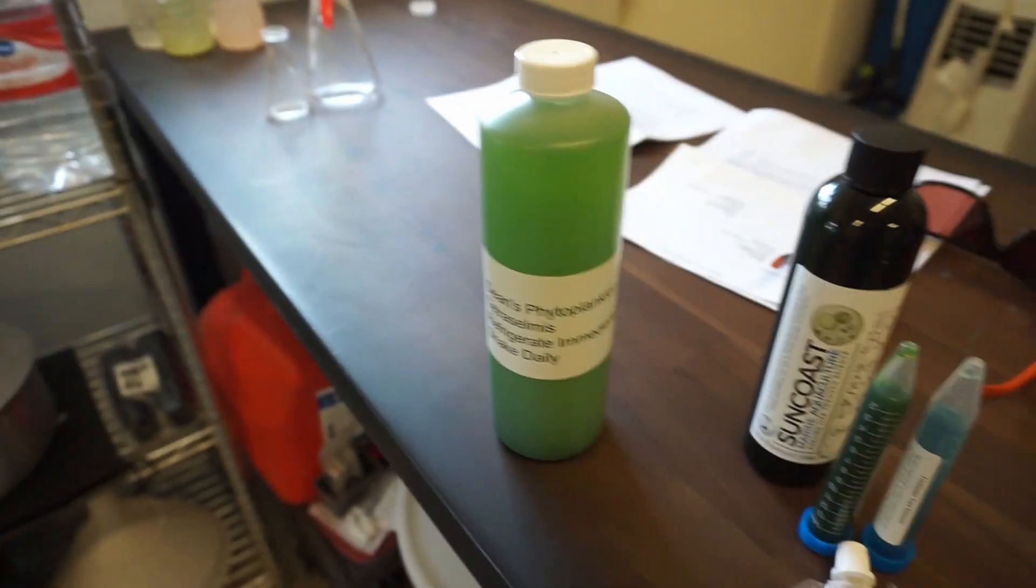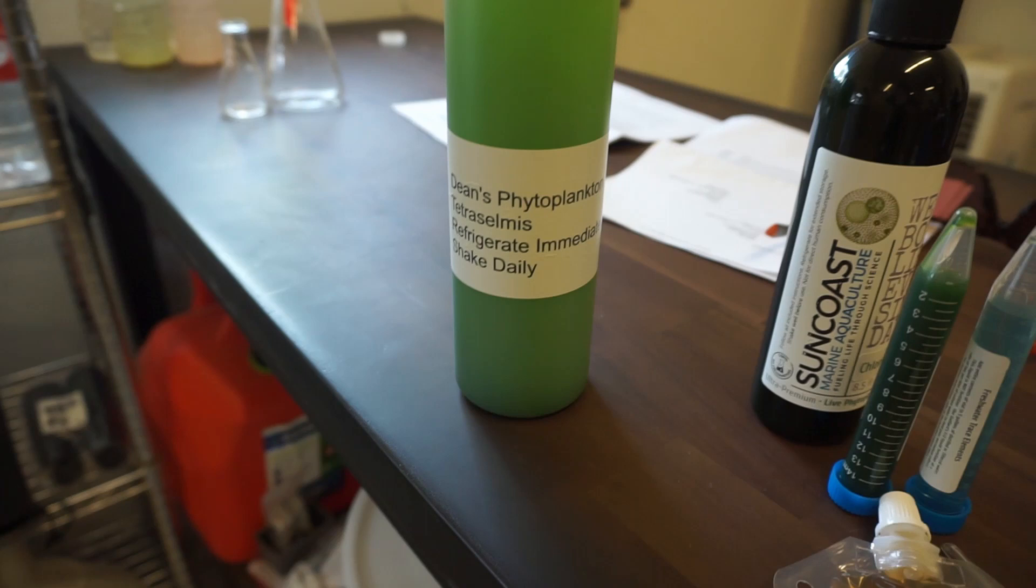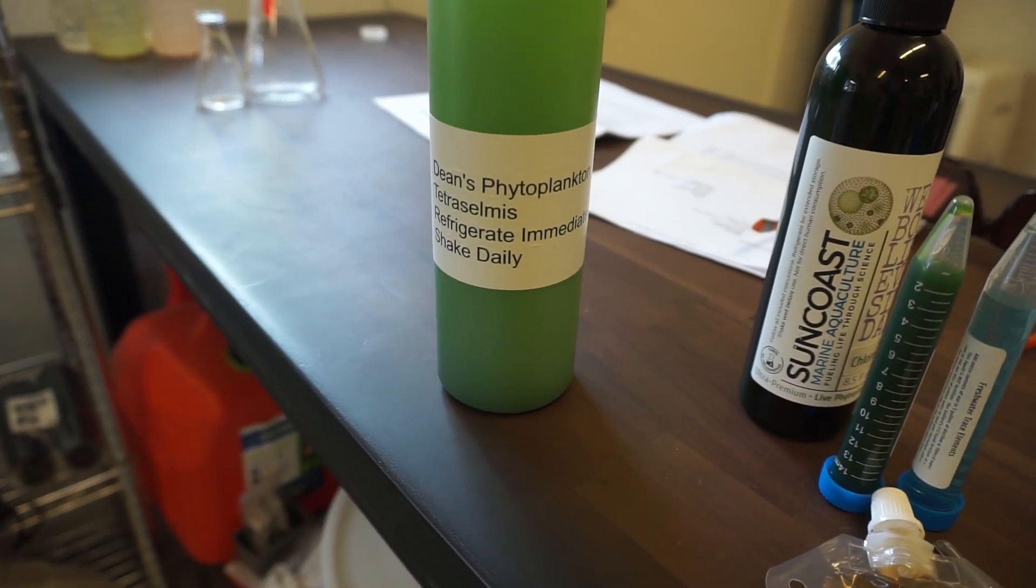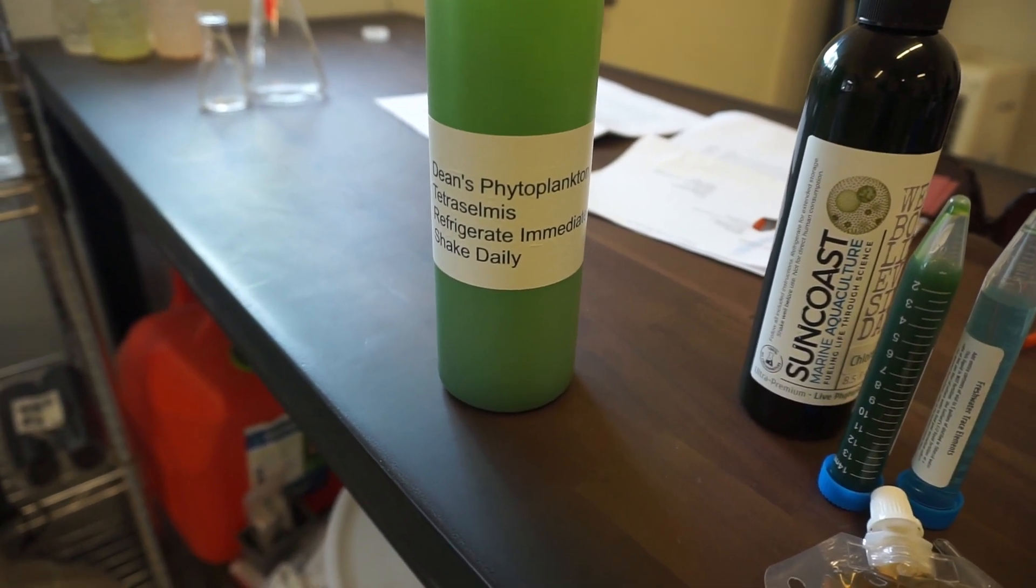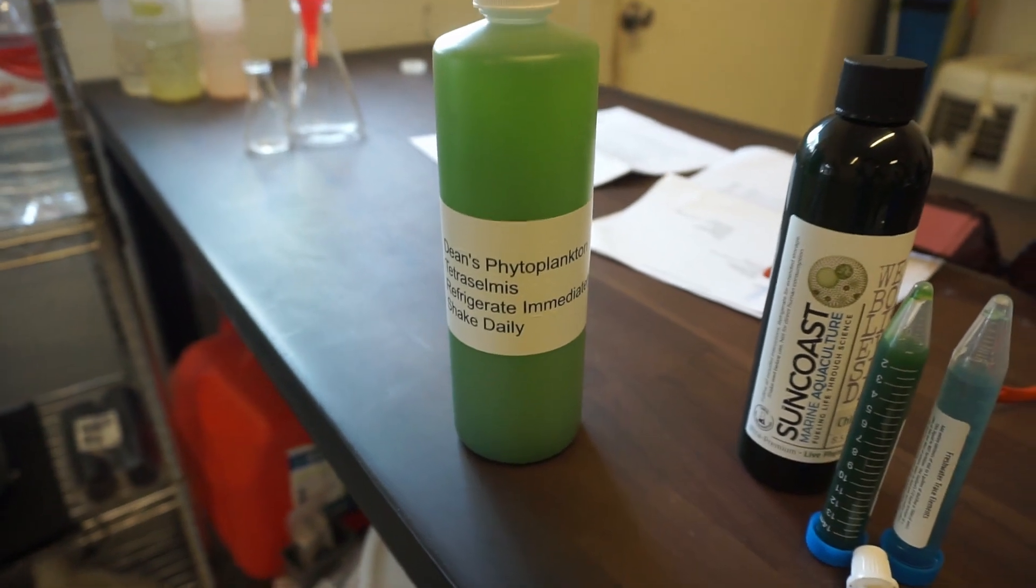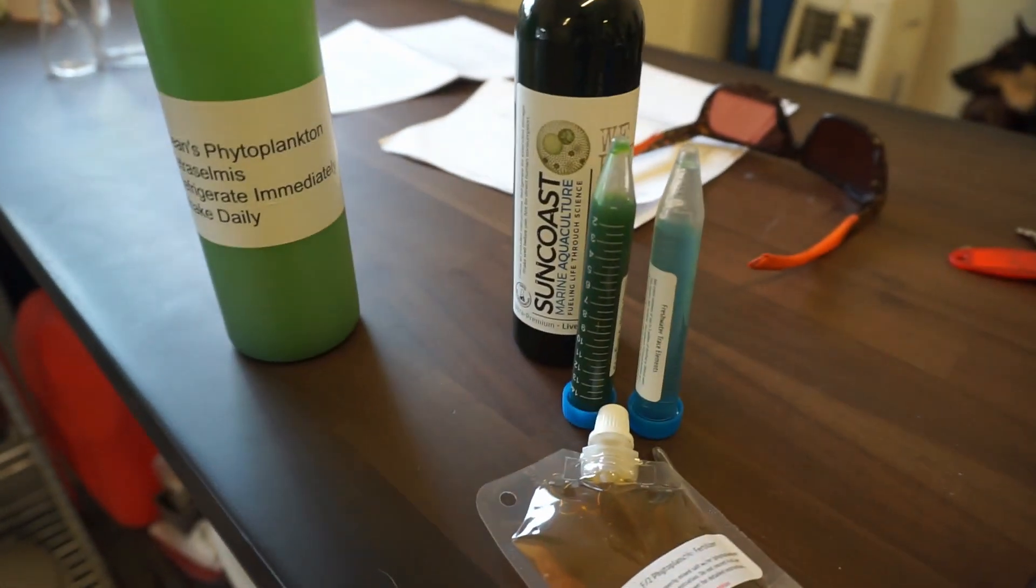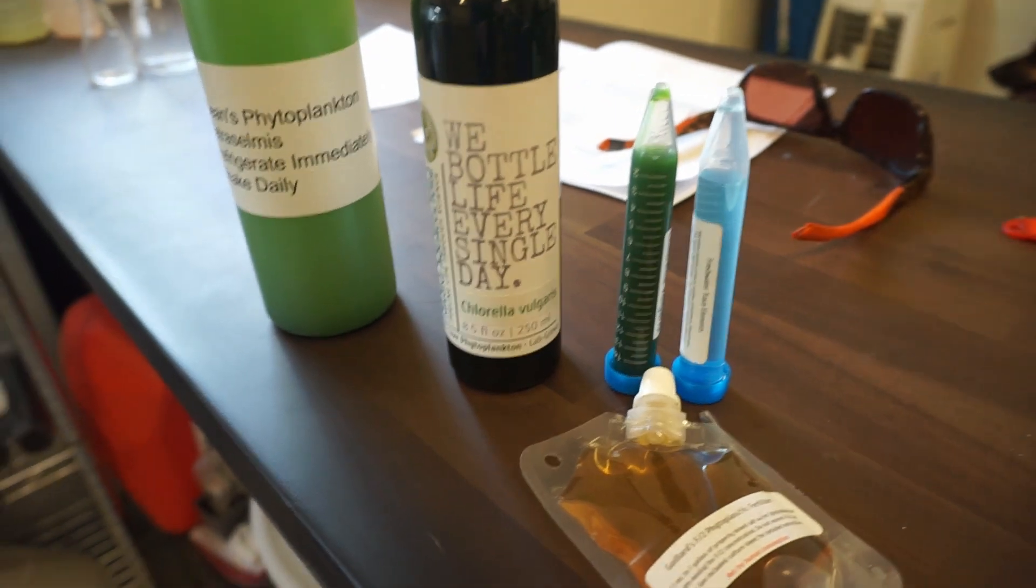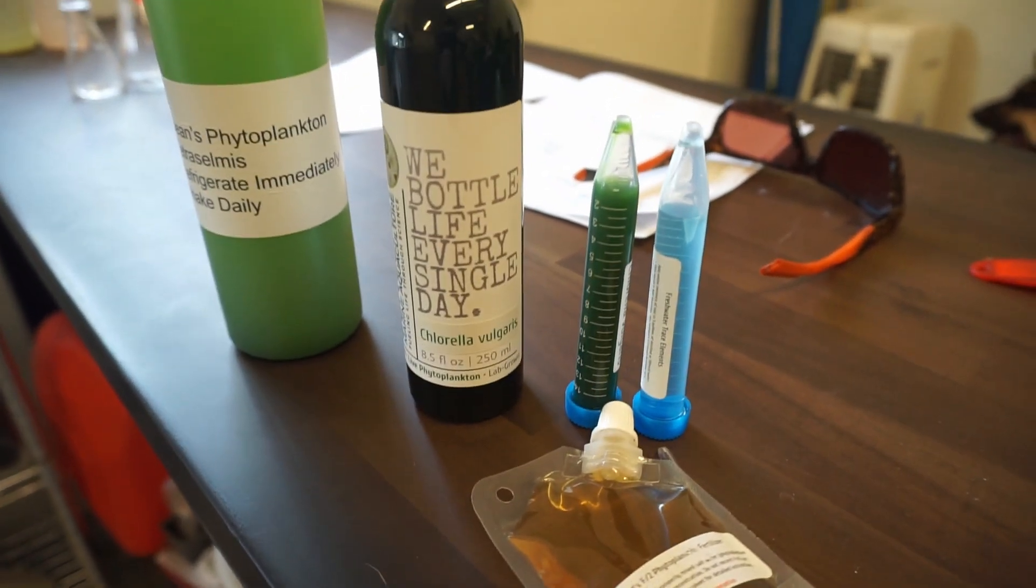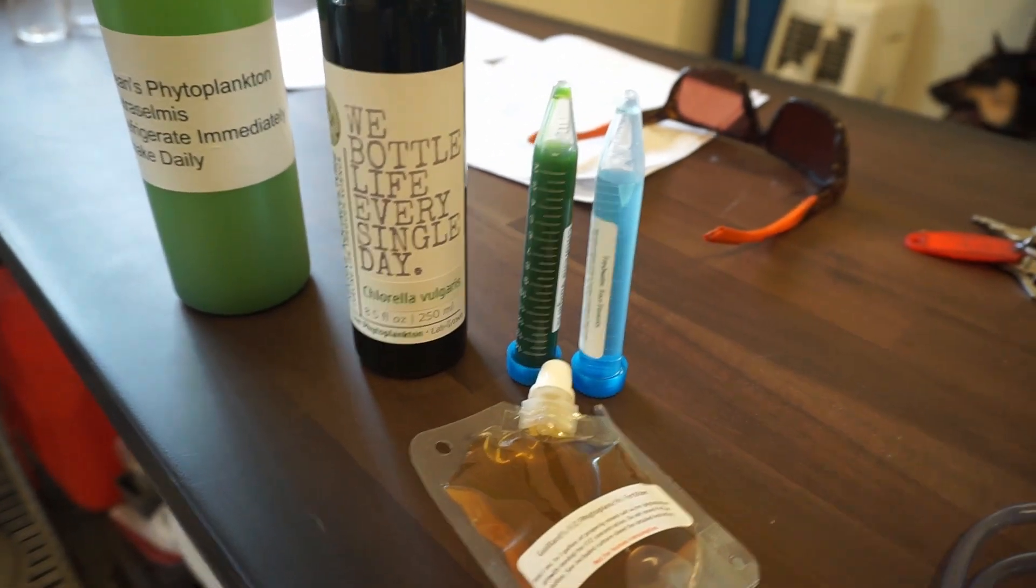And then the other thing that I got separately was this stuff right here - Dean's Phytoplankton, and this is Tetracellmus or Ceilamus maybe. So that'll be its own thing. And then this stuff right here is the Chlorella variety, and it came with this stuff here, a little bit of fertilizer.